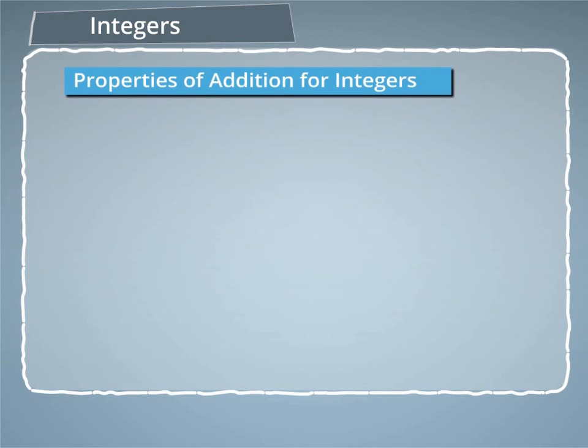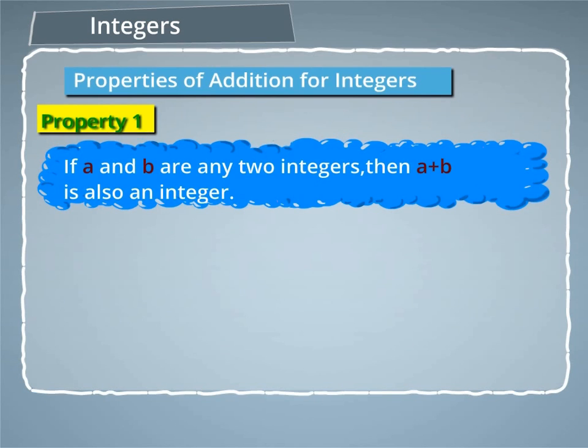Now let us discuss some of the properties of addition for integers. Property 1: If A and B are any two integers, then A plus B is also an integer. This is called closure property of addition.